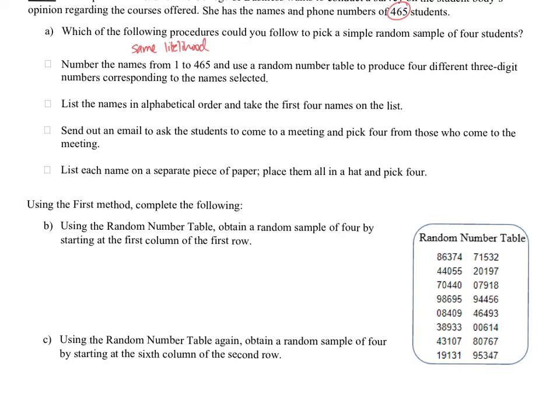So let's read the first one. Number the names from 1 to 465 and use a random number table to produce four different three-digit numbers corresponding to the name selected. Well, when we do that, we're just using a random number table. So everything is random and each person, their name is represented once, which means they have the same likelihood. So this is a procedure we could follow. Next one. List the names in alphabetical order and take the first four names on the list. Well, this one, the students don't have the same likelihood. It's going to be the first four. All the rest of them are not going to get picked. So that is not going to be one.